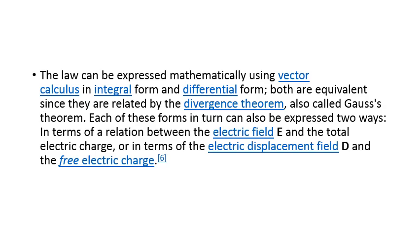Gauss law itself is essentially equivalent to the inverse square law, and Gauss law of gravity is essentially equivalent to Newton's inverse square law of gravity. So we can conclude that whenever we have any inverse square law, we can find an analogical law similar to Gauss law. This law can be expressed mathematically using vector calculus in integral form as well as differential form — so we always have two forms for Gauss law.